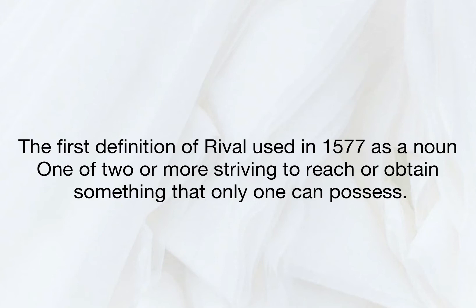The meaning of RIVAL has evolutionarily changed. This word was first recorded in 1577 and has been derived from the Latin language. The first meaning of RIVAL was recorded in 1577 as a noun, and that definition was one of two or more striving to reach or obtain something that only one can possess.